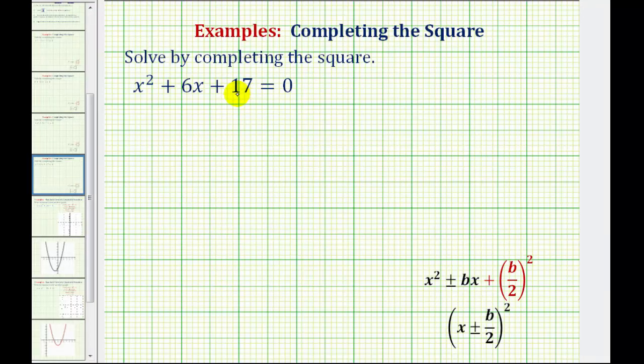The first step here is to move the constant term to the right side of the equation. So I'll have to subtract 17 on both sides of the equation. We would have x squared plus 6x. Now we're going to make this a perfect square trinomial by adding a constant here. So I'm going to leave a space for the constant.